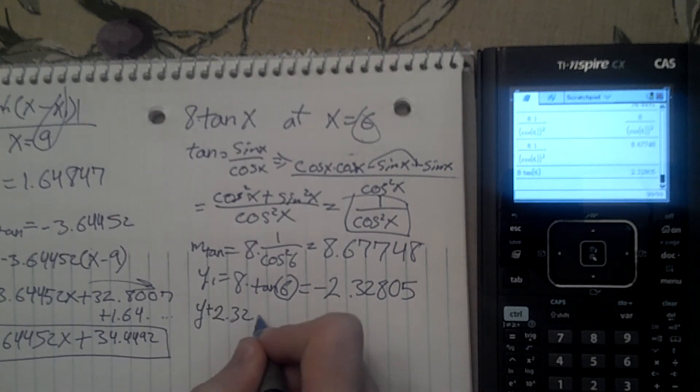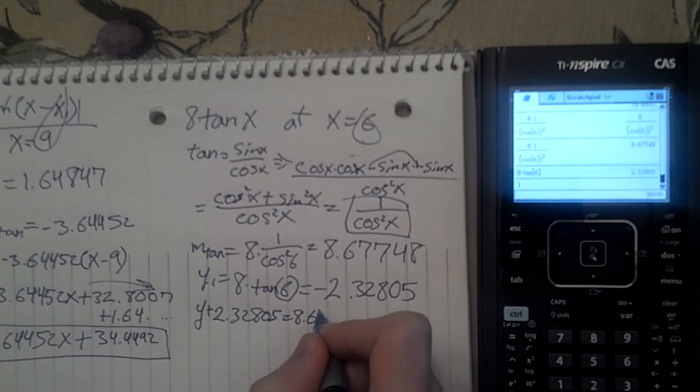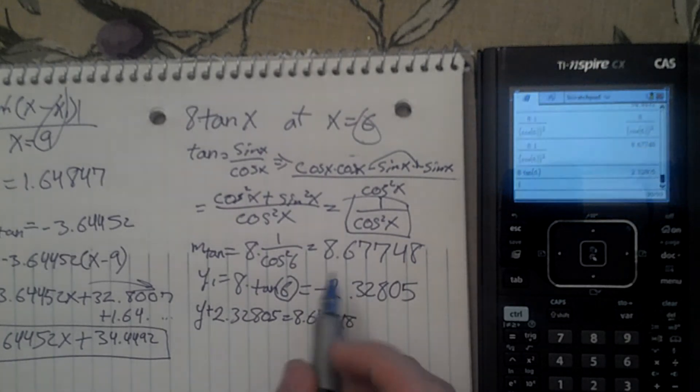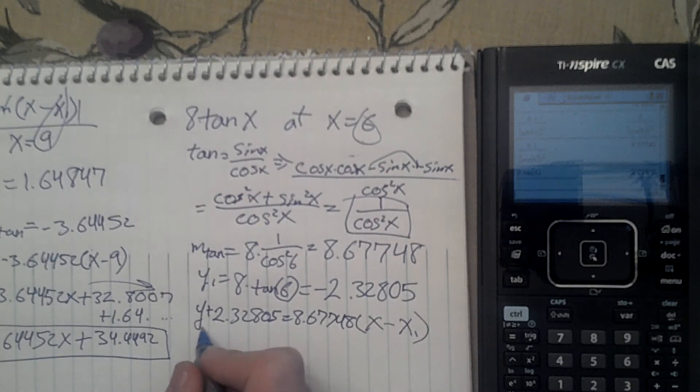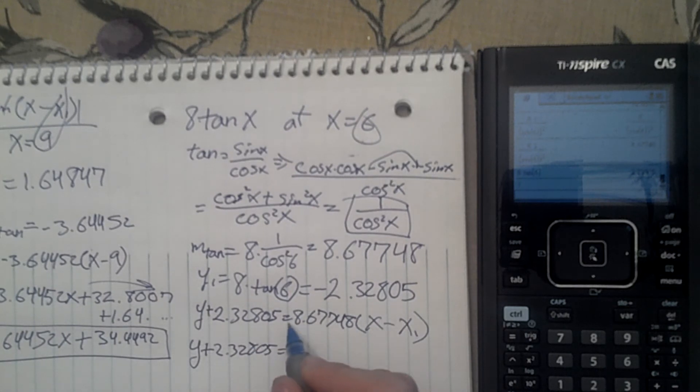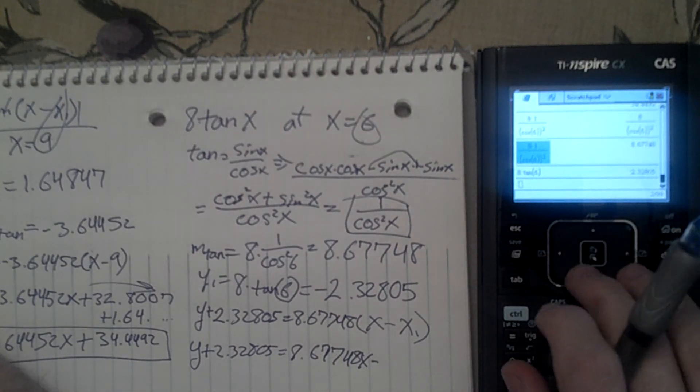Equals m, which is 8.67748, times x minus x1, which is 6. We need to multiply this here. y plus 2.32805 equals 8.6748x. And this is going to be times negative 6, so that's minus.